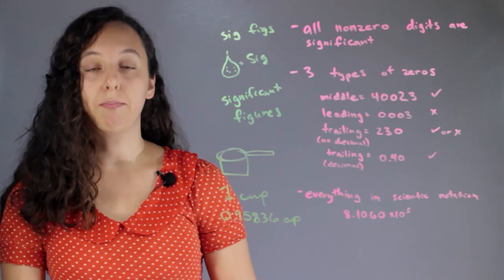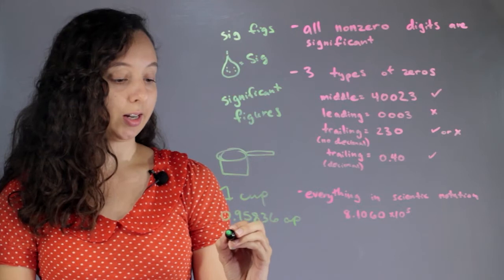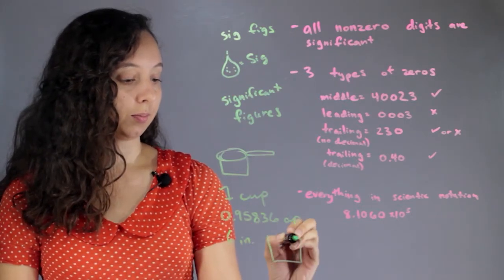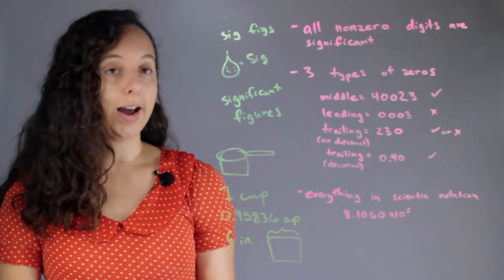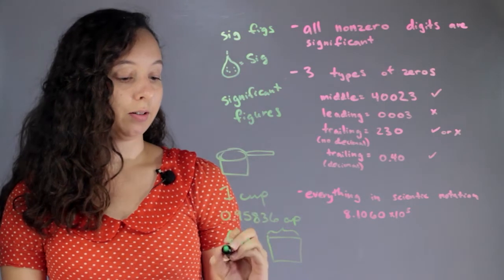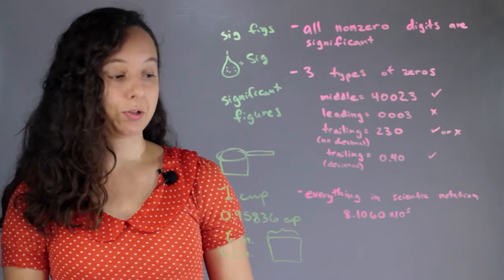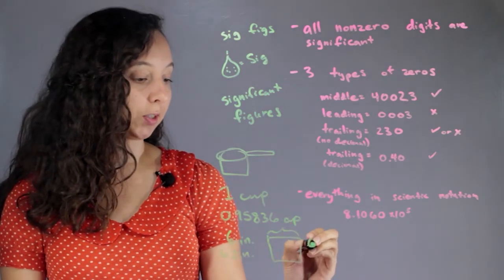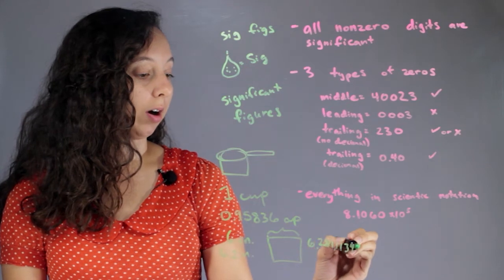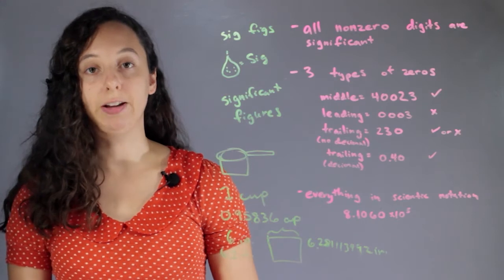For instance, let's say you're measuring something. Let's say you measure the back of a book and it's 6 inches. Now, with a ruler, you might even be able to tell that it's actually 6.2 inches. But what if someone tried to tell you that they measured the same book and they found it was 6.281113492 inches? You'd be like, no, you just don't have that many significant figures.